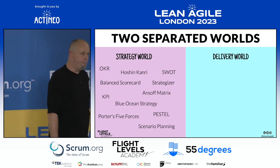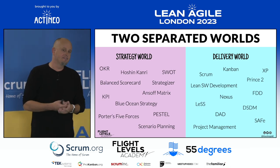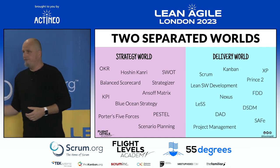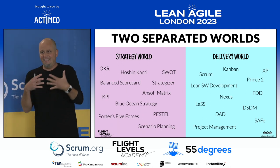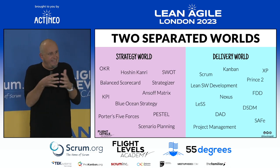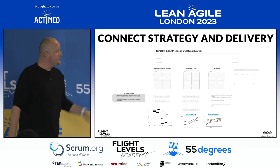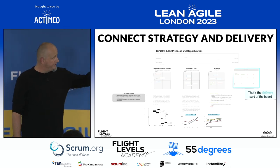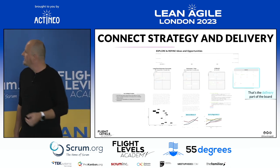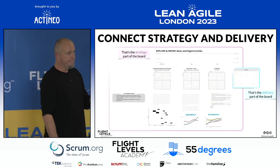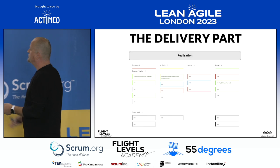In the strategy world, we see people doing Hoshin Kanri, SWOT analysis, scenario planning, OKRs, KPIs — great things. In the delivery world, organizations are doing Scrum, Kanban, SAFe, LeSS, and all these delivery frameworks. But the problem is these two worlds are somehow separated — not connected. That's exactly what we want to achieve with the Flight Level 3 system. On this board, the right side is the delivery part and the rest is the strategy part. Both are on one board, visible and connected.